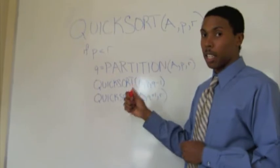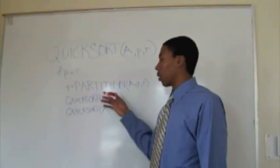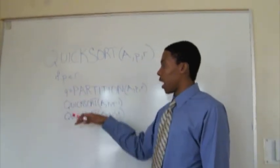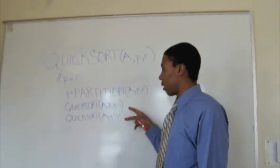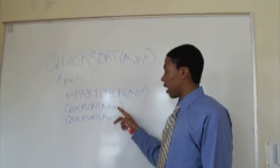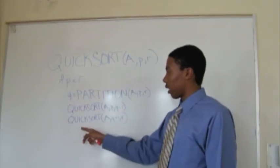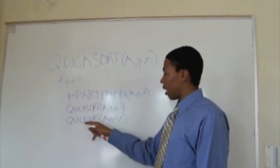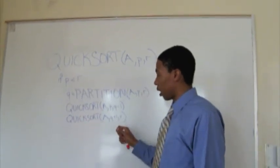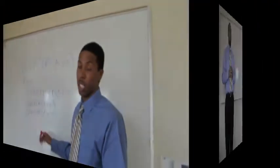p is going to represent our leftmost value, and r is going to represent our rightmost value. Within the partitioning function, we pass the array through so we can get our pivot point as equal to q. At the bottom you'll notice there are two recursive calls: one checks the left side of the pivot point, keeping the algorithm at q minus 1, and the other checks the right side of the array, which is q plus 1, giving us our value for r. And this is how the QuickSort function works.